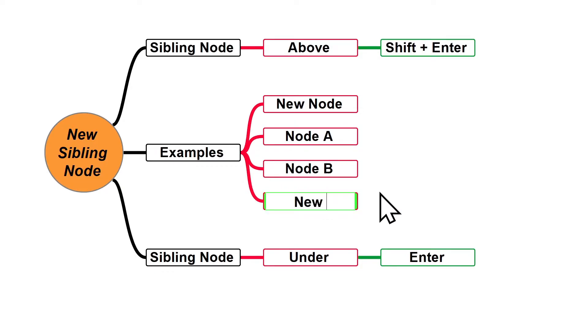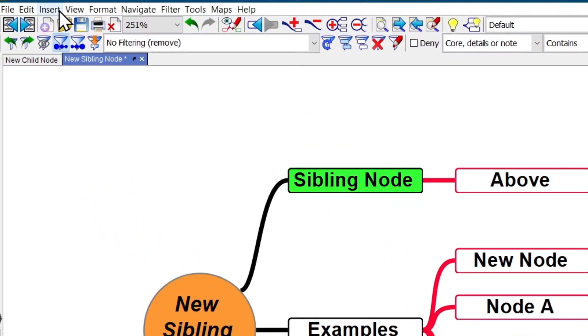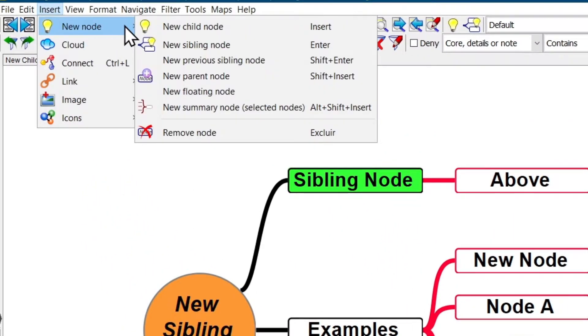As you can see, I just created this new node under node B. You can also find information about new nodes going to menu bar Insert, New Node, and here you have all kinds of new nodes you can create.